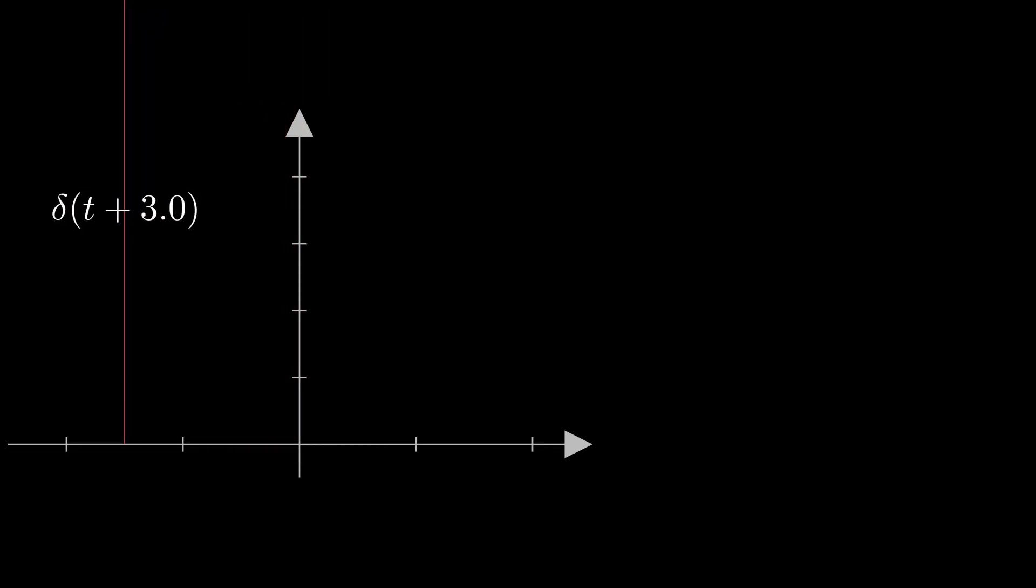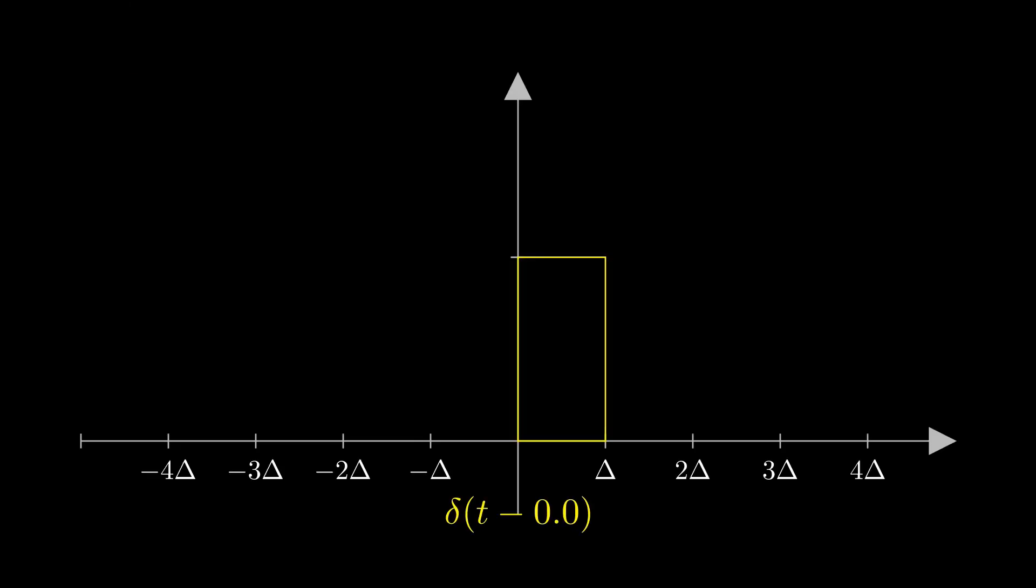The unit impulse function is very difficult to visualize directly. One way to visualize it is as follows: consider a tall narrow rectangle with width of delta and height of 1 over delta, such that the area enclosed by it is equal to 1. By decreasing the width, the height is going to be increasing by the same factor so that the area enclosed by the rectangle remains one.